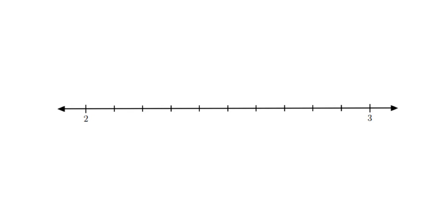If we look at this little piece of the number line which goes from 2 all the way up to 3, what we've done is we've divided this gap between 2 and 3 into 1, 2, 3, 4, 5, 6, 7, 8, 9, 10 pieces.